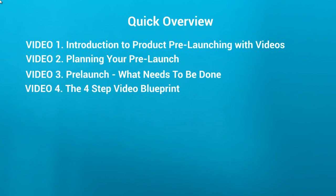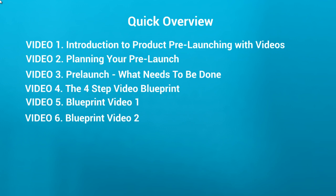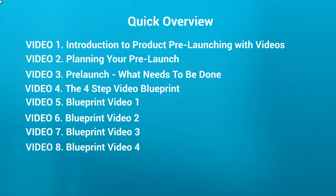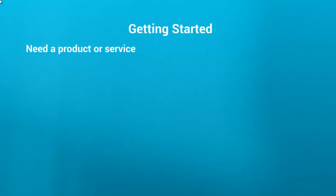Video number four is the four-step video blueprint — a quick overview of the four videos themselves. In video number five we'll dive into video one, video number six covers video two, video number seven covers the blueprint for video three, and video number eight covers video four. Last but not least, video number nine is about getting your videos created — once you know what videos one through four should look like, we'll give you direction on how to get them made yourself or by hiring a professional video spokesperson.